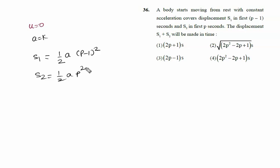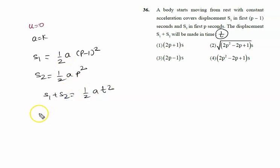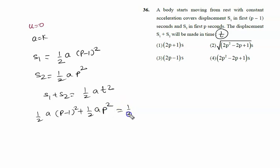Since acceleration is constant, we write a only. The combined displacement s1 plus s2 is made in total time t, so s1 plus s2 equals half a t squared. Substituting: half a times (p minus one) squared plus half a p squared equals half a t squared. The half a cancels throughout, giving (p minus one) squared plus p squared equals t squared.